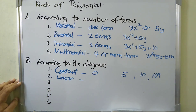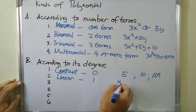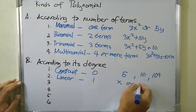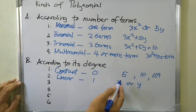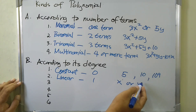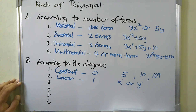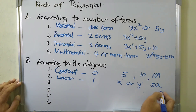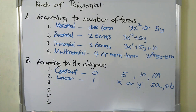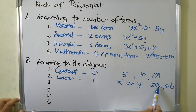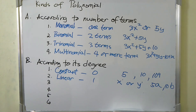Linear polynomial is a polynomial of degree one. For example, we can have x, or y — the highest exponent is one. We can also have 5a or 10b. To determine that a polynomial is linear, we just look at the variable and see if the exponent is only one.